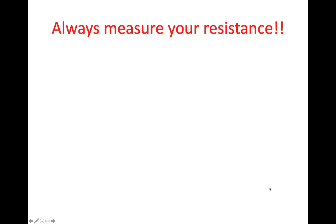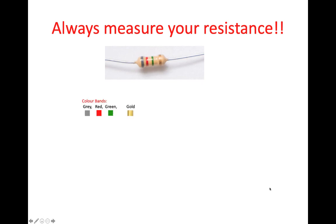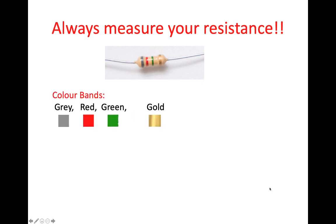Now, I mentioned earlier that we always want to make sure that you measure resistance — it's important to know what resistance value you have in your circuit. Just to give an example, I had a resistor I was going to use for the quiz, and it was grey, red, green, and gold. Applying the same logic: grey has a value of 8, and the second digit red has a value of 2.